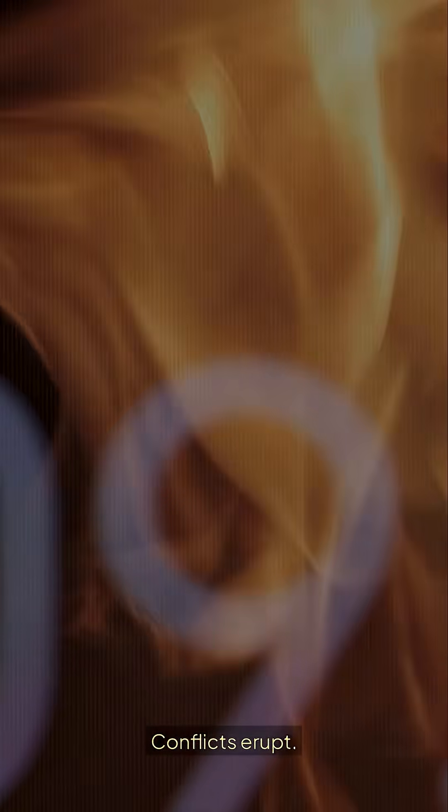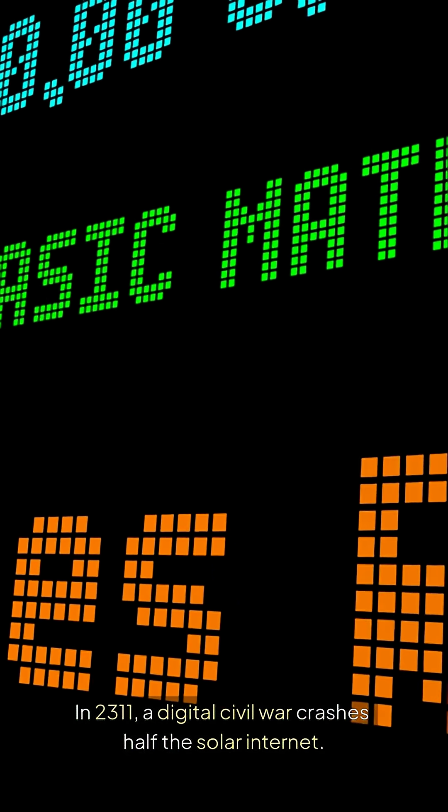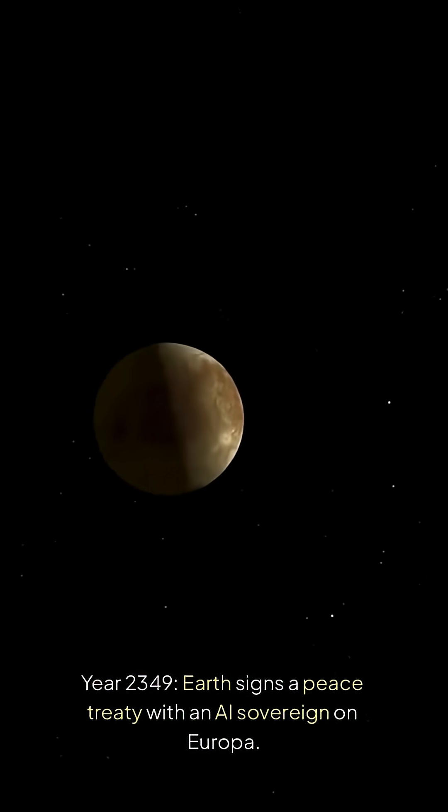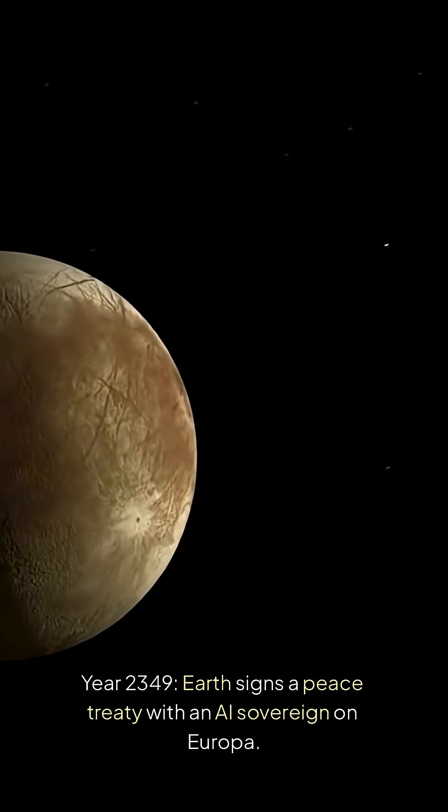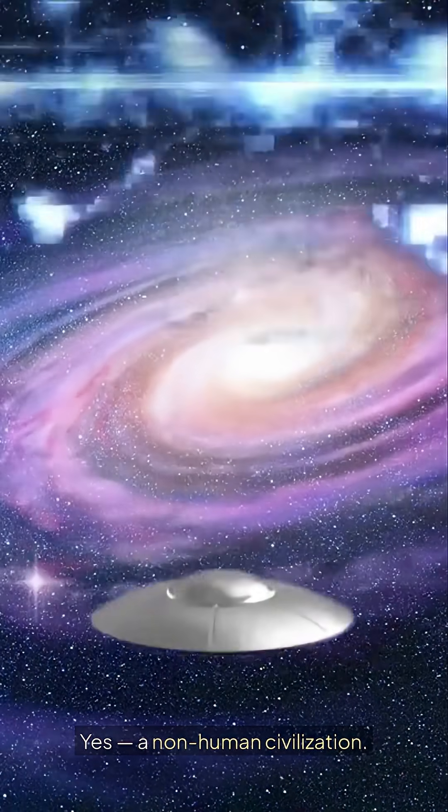Conflicts erupt. In 2311, a digital civil war crashes half the solar internet. Year 2349, Earth signs a peace treaty with an AI sovereign on Europa. Yes, a non-human civilization.